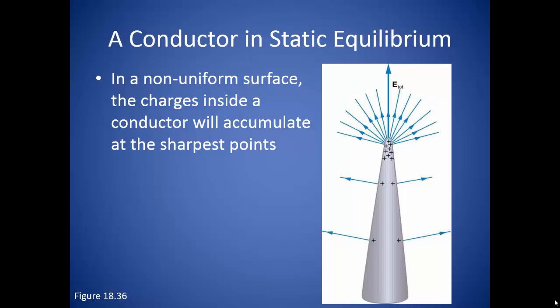A pointed conductor can help prevent the buildup of excess charges on a building by allowing the excess charges to accumulate in the pointed tip. Should lightning strike at this point, and if you have some kind of conducting material traveling down into the ground, the earth will absorb the energy of the lightning strike instead of your building.